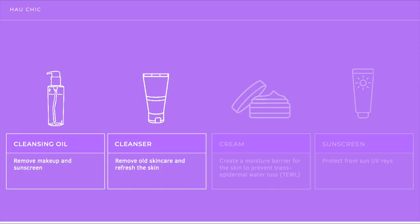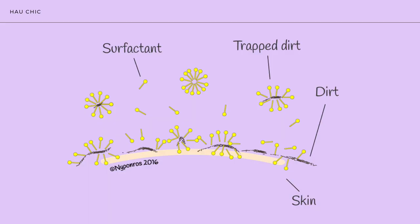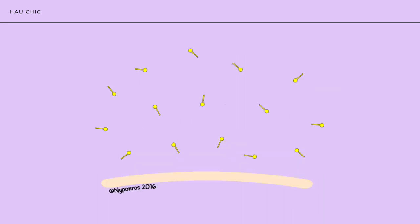The products I'm going to go through are cleansing oils, cleansers, creams, and sunscreen. I'll explain what ingredients actually make up each of these. Starting with cleansing oils and cleansers: the ingredients that remove excess dirt, sebum, oil, and makeup are grouped into what is called a surfactant. A surfactant has a fat-soluble tail (hydrophobic, meaning water-hating) and a water-soluble head (hydrophilic, meaning water-loving). When you apply the surfactant to your face, the hydrophobic tails attach to the excess dirt, sebum, and oil, and lift it away from the skin, thereby cleaning it.